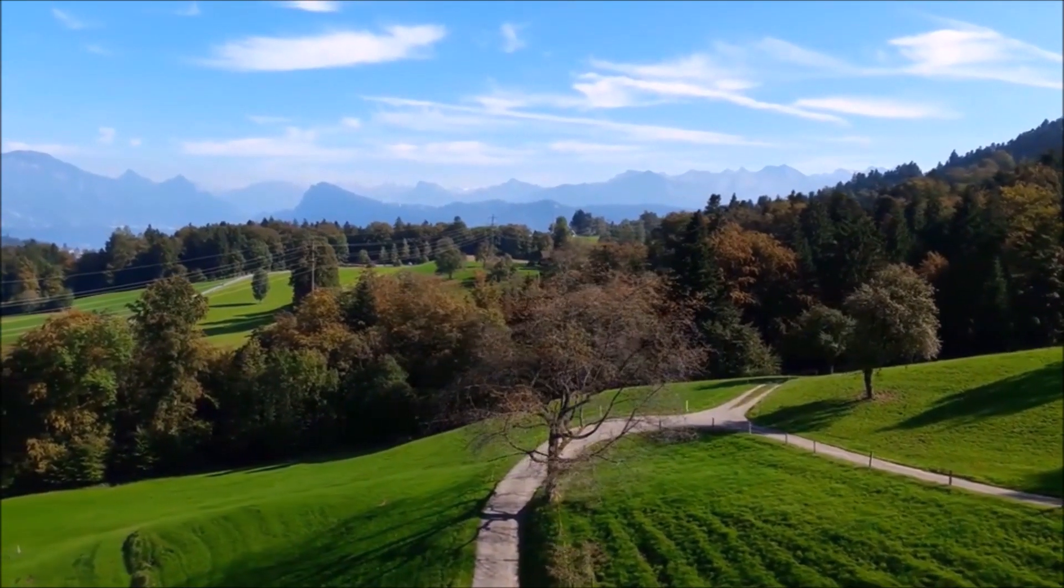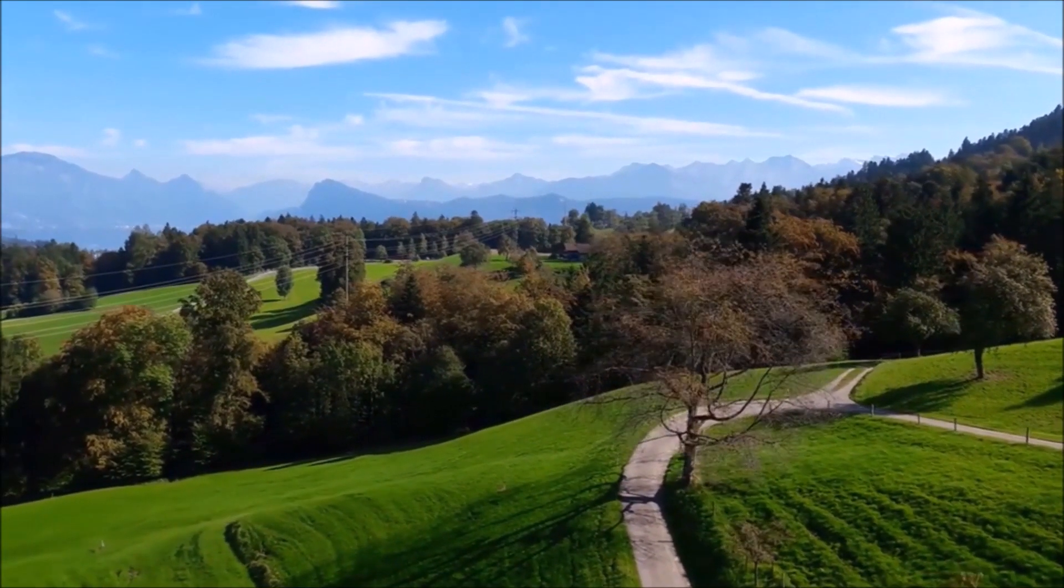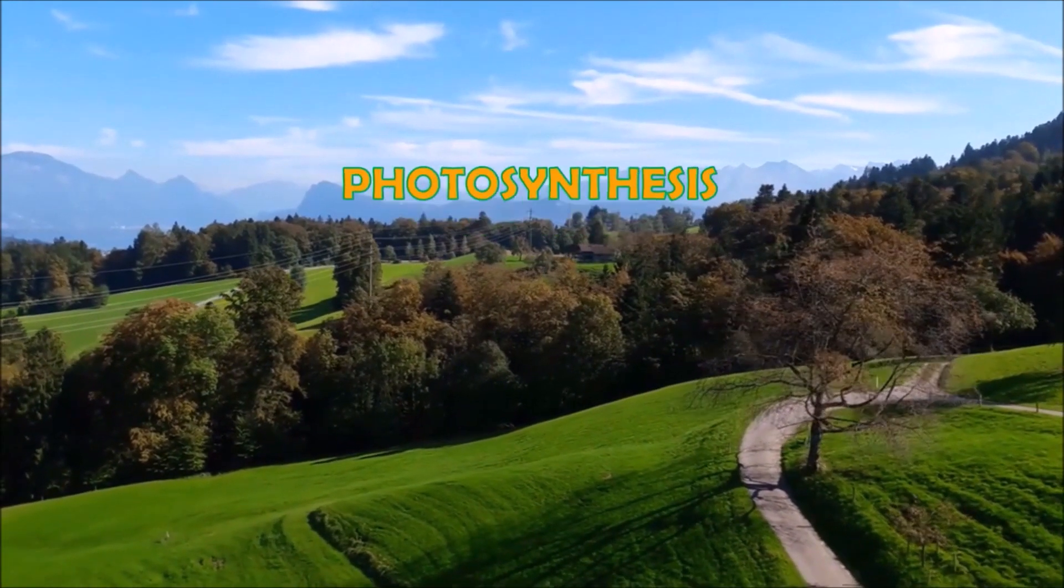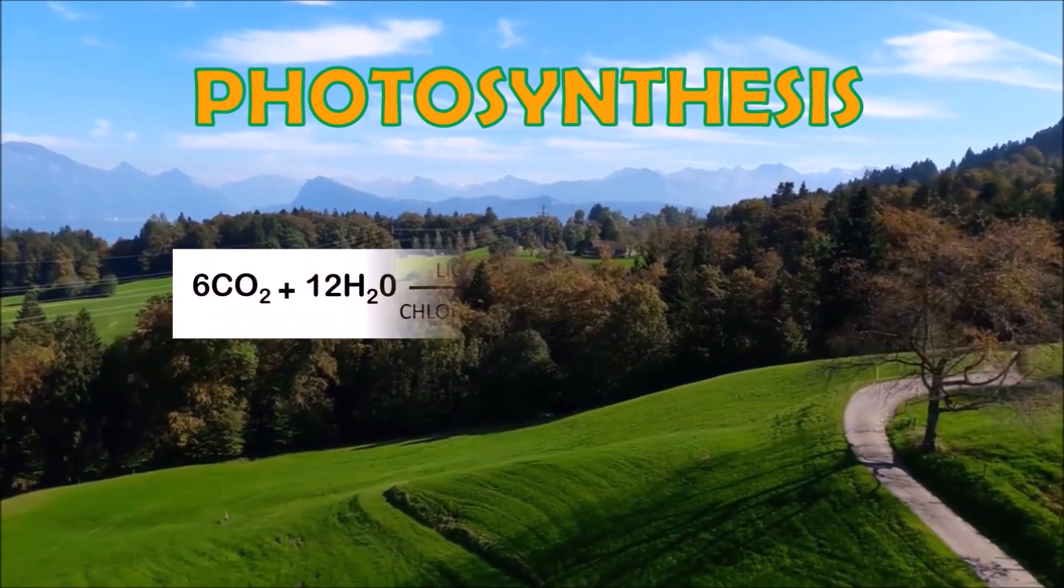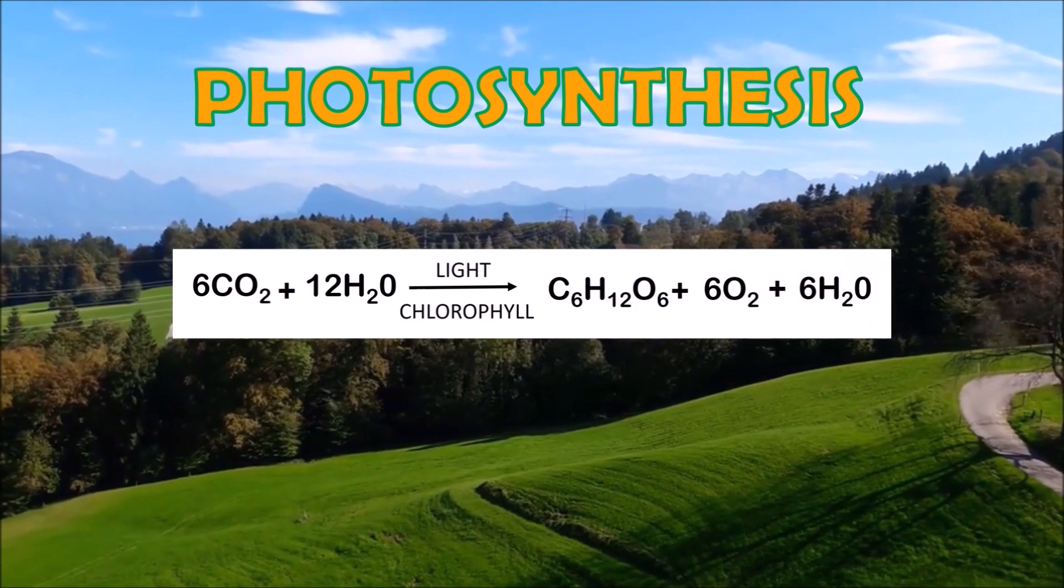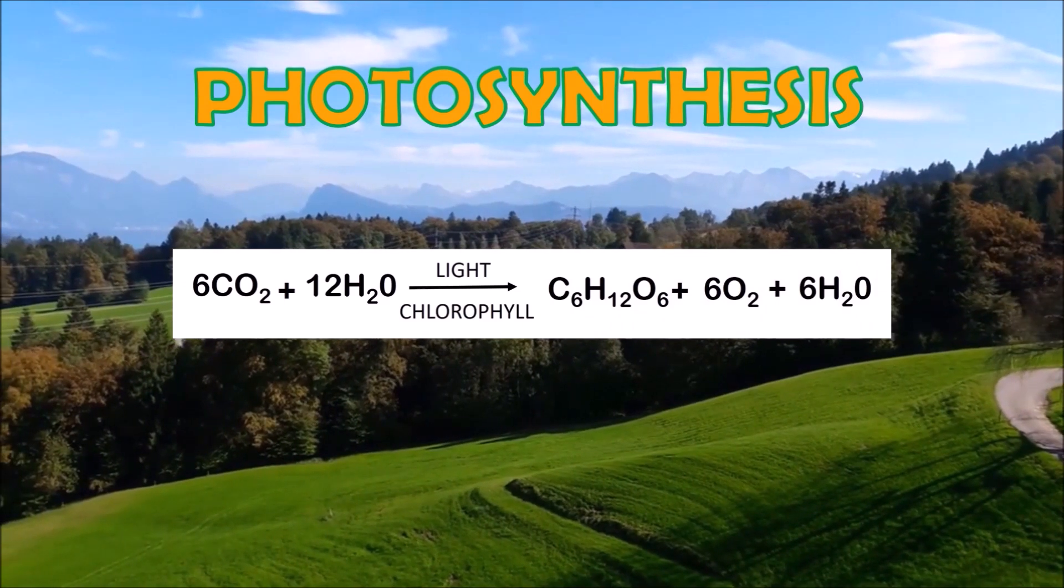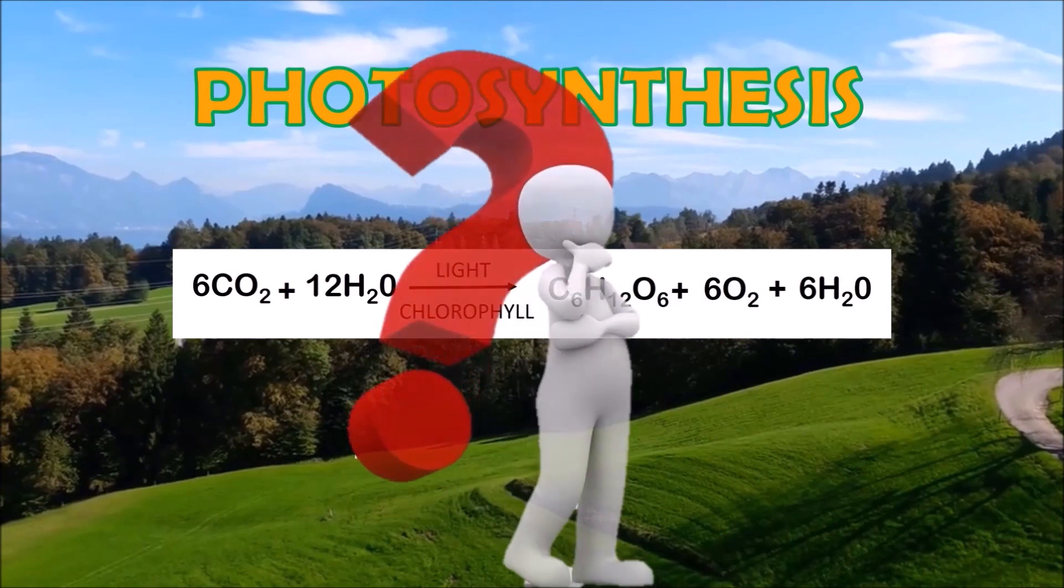In the earlier videos, several times we have defined the process of photosynthesis with an equation such as 6CO2 plus 12H2O gives rise to C6H12O6 plus 6O2 plus 6H2O. Is it so simple as shown in the equation?